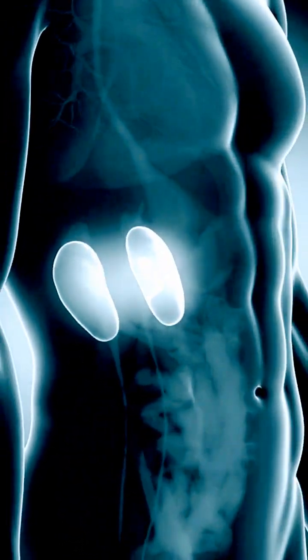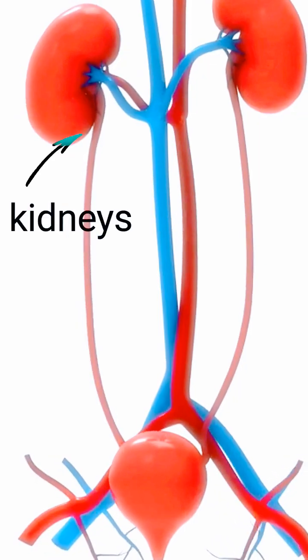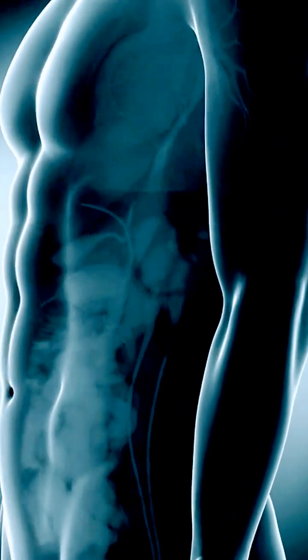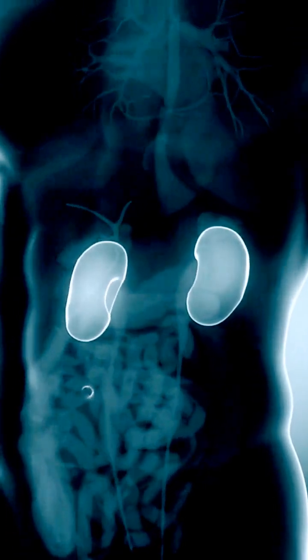The urinary system filters blood and produces urine as a waste by-product. The kidneys, renal pelvis, ureters, bladder, and urethra are the organs of the urinary system.